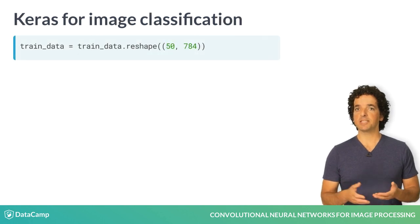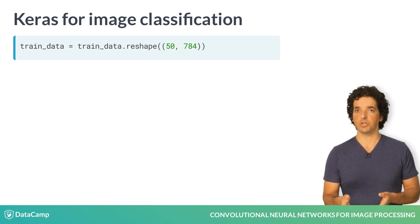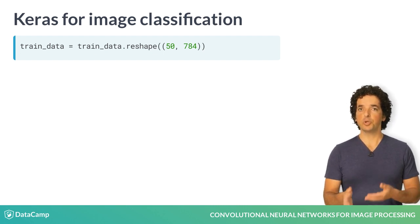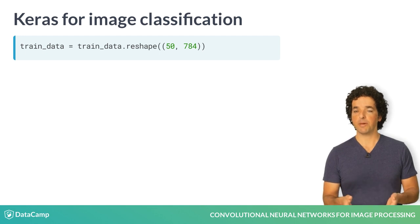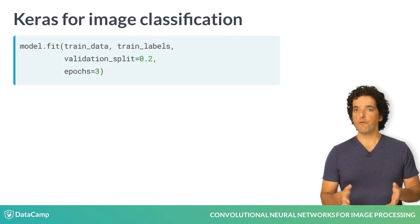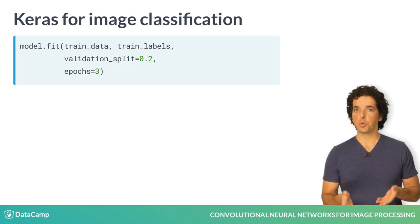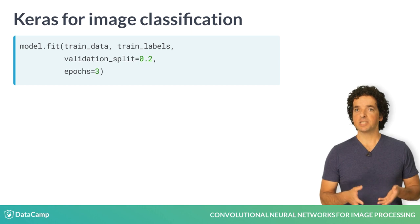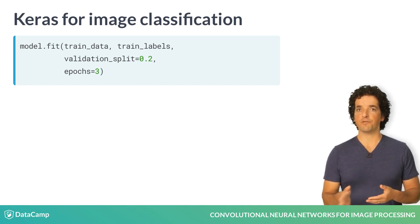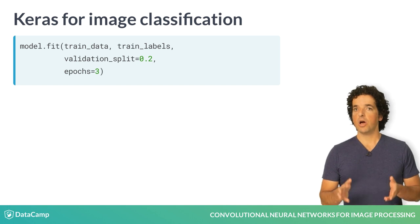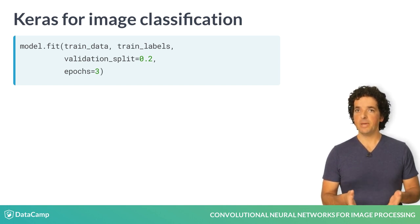The model expects samples to be rows in an array, and each column to represent a pixel in the image. So before we fit the model, we need to convert the images into a two-dimensional table using the reshape method. We fit the model to the training data. During training, the network adjusts its weights through backpropagation and gradient descent. The model will run for three epochs, meaning that it will go over all of the training data three times.